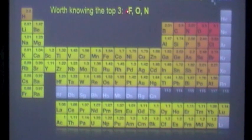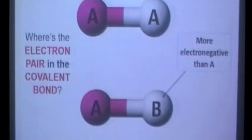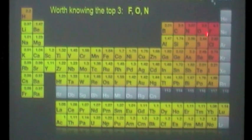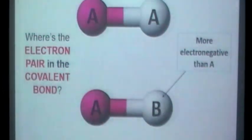So if we consider these two covalent molecules, we've got A bonded to A and we've got A bonded to B. And I'm telling you that B is more electronegative than A so it would have a higher electronegativity value. What you've got to try and think about is where would the electron pair actually sit in that covalent bond.